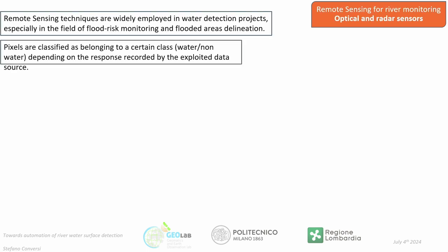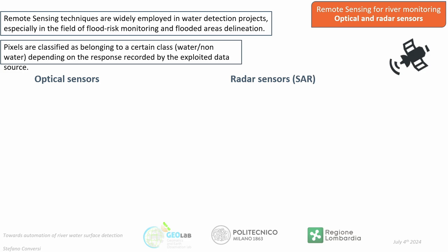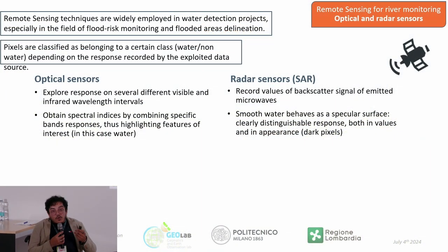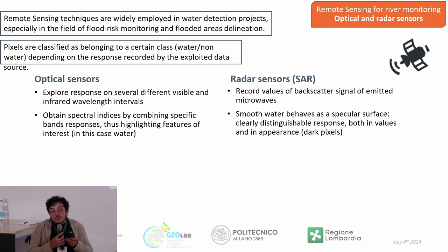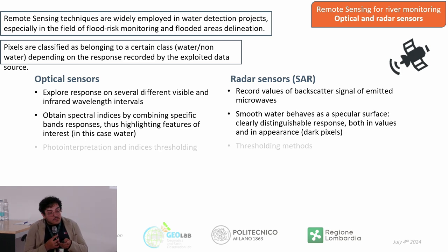Remote sensing techniques, especially satellite data, are used for mapping water. There are different sensors and approaches. Optical sensors allow us to explore different wavelengths and obtain spectral indices that can highlight the presence of water. Radar sensors provide backscatter signals from active sensors, which can also easily recognize the presence of water given its distinct radar response.